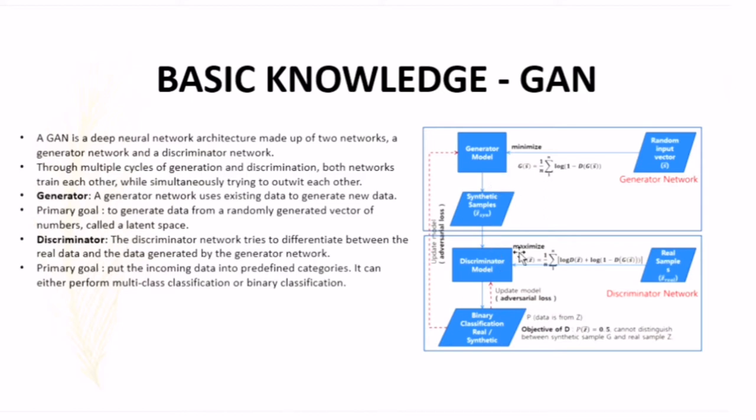The generator network uses existing data to generate new data. The primary goal is to generate data from a randomly generated factor, usually called latent space, while the discriminator network tries to differentiate between real data and data generated by the generator network. The primary goal is to put incoming data into pre-defined categories. It can either perform multi-class classification or binary classification.